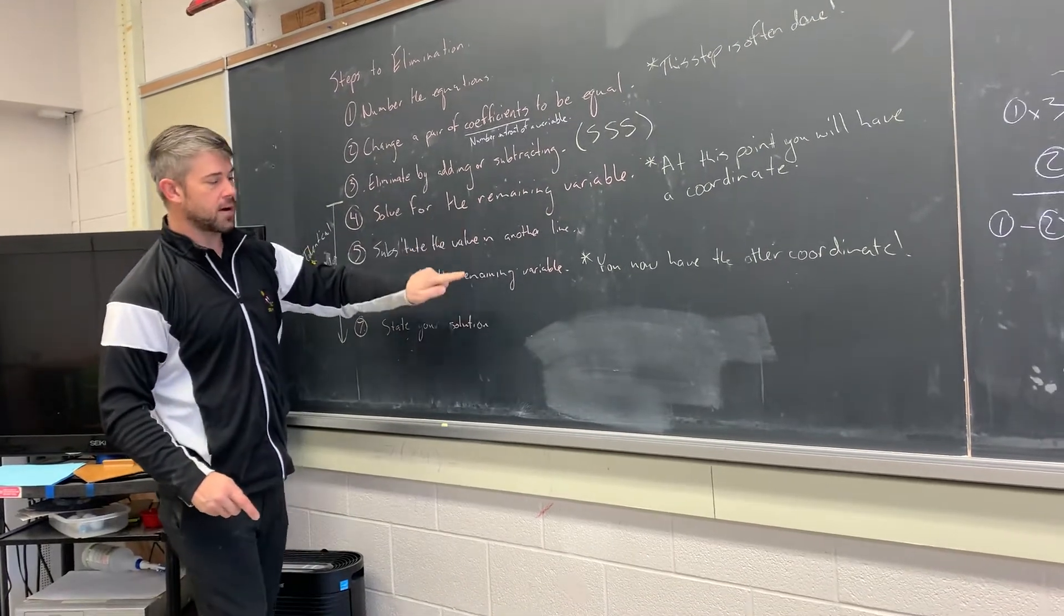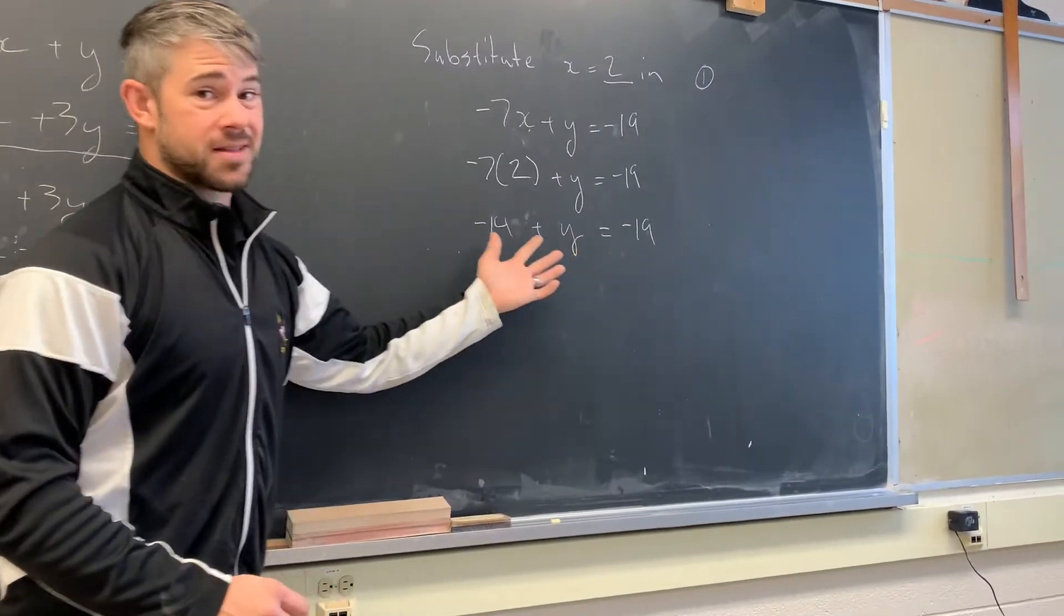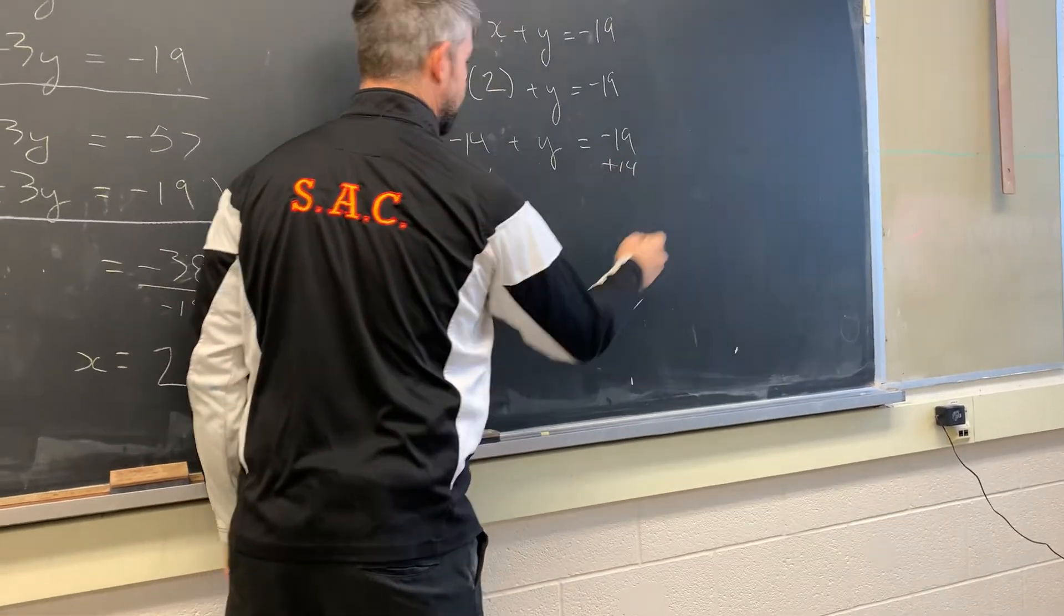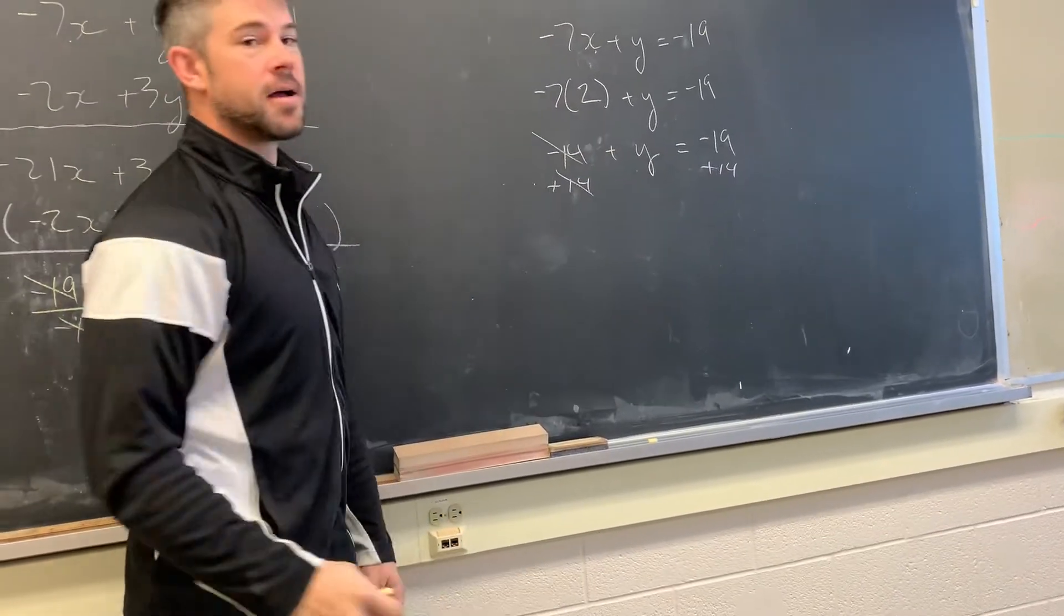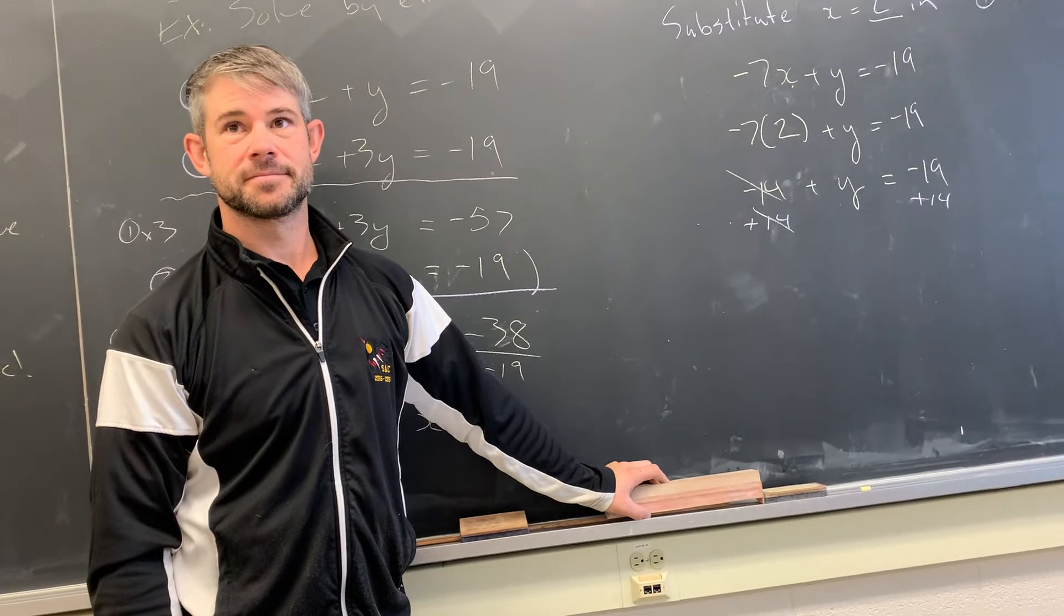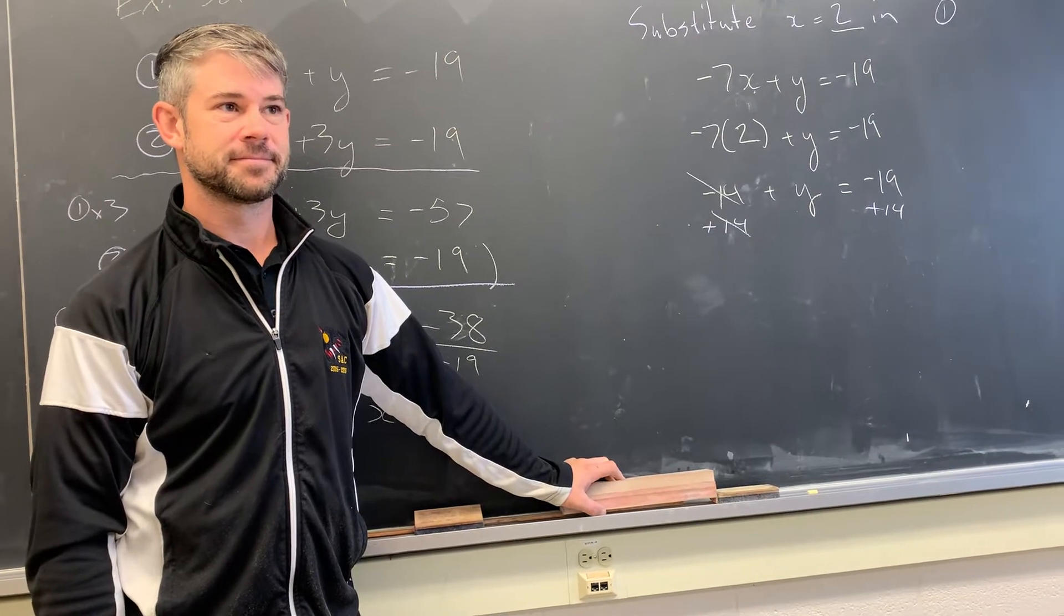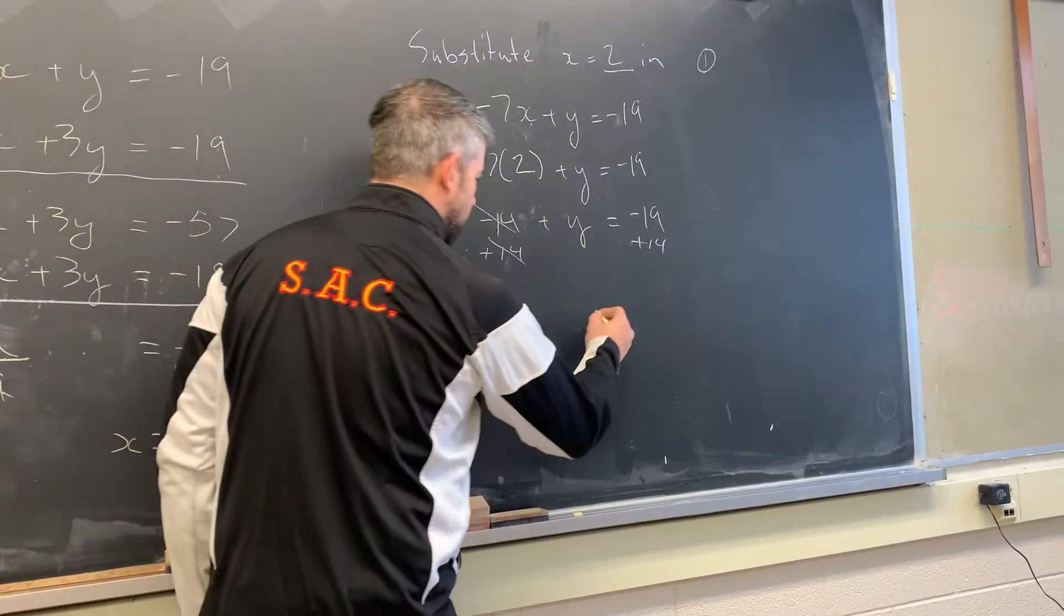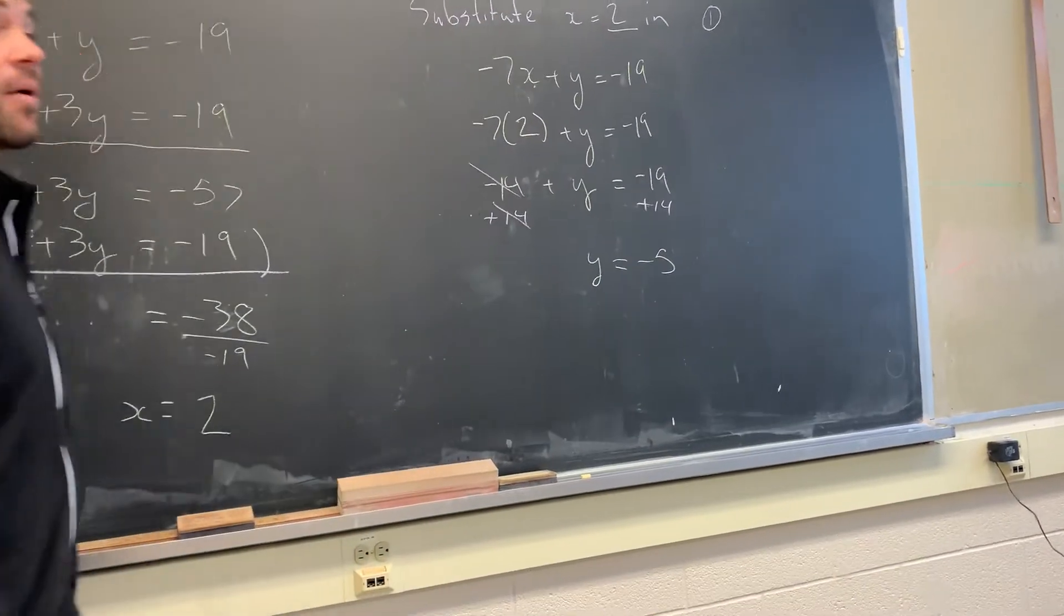So we've already solved for one variable. We're now solving for the remaining variable to find our other coordinate. Got a simple one-step equation. I have to get rid of this negative 14. I'll move that term to the other side. What I do to one side, adding 14, I must do to the other. These cancel, need a need. Sorry, the interruption.